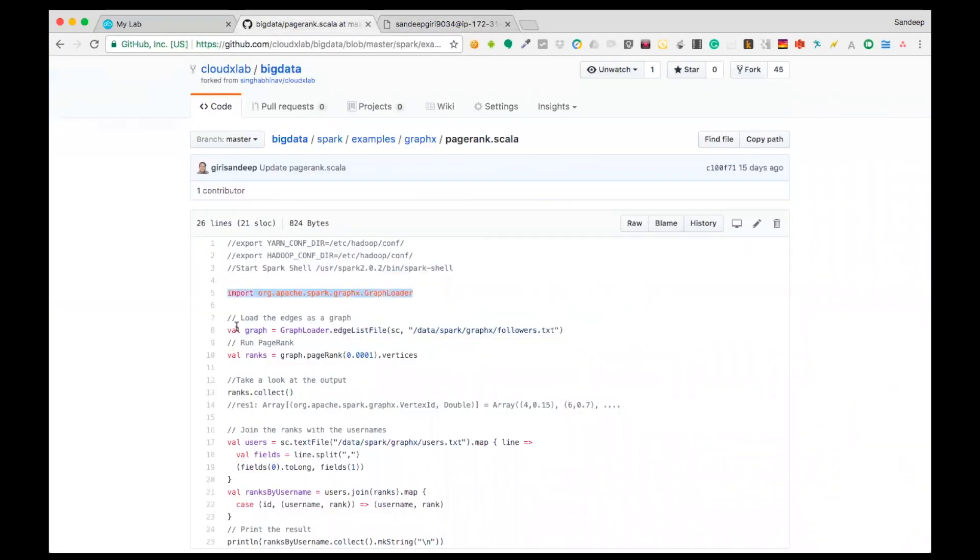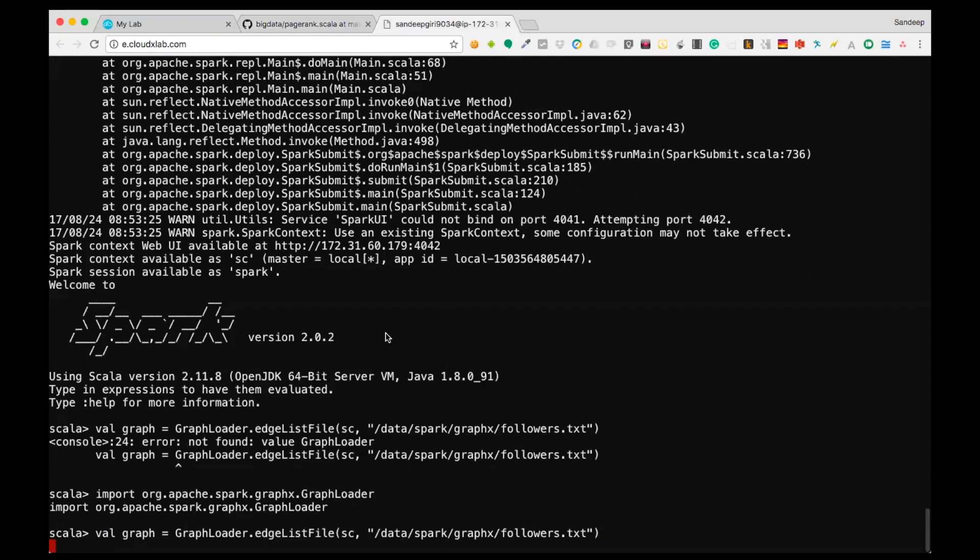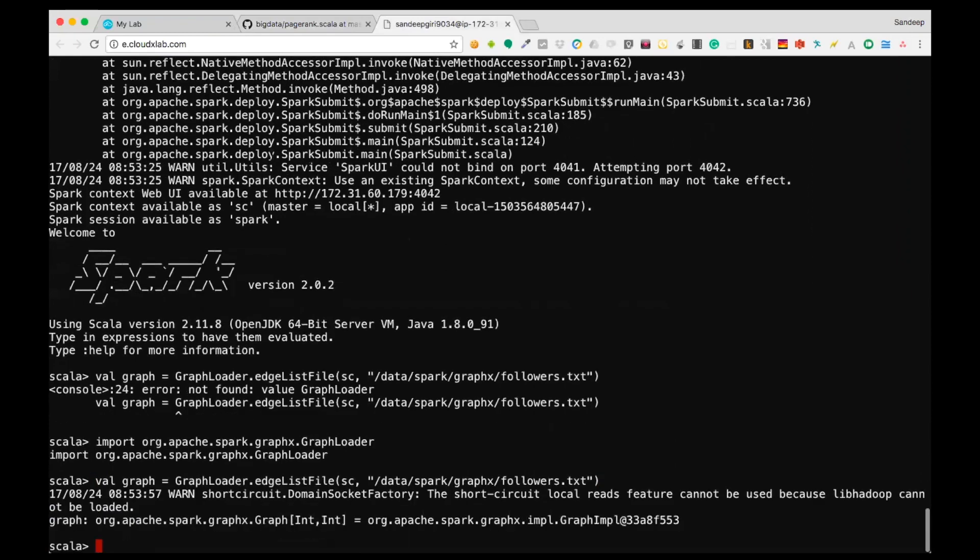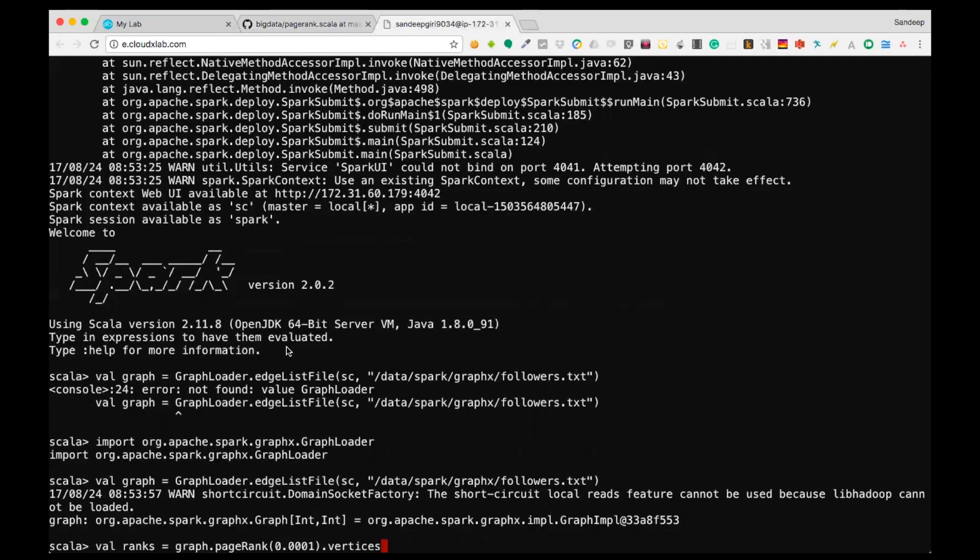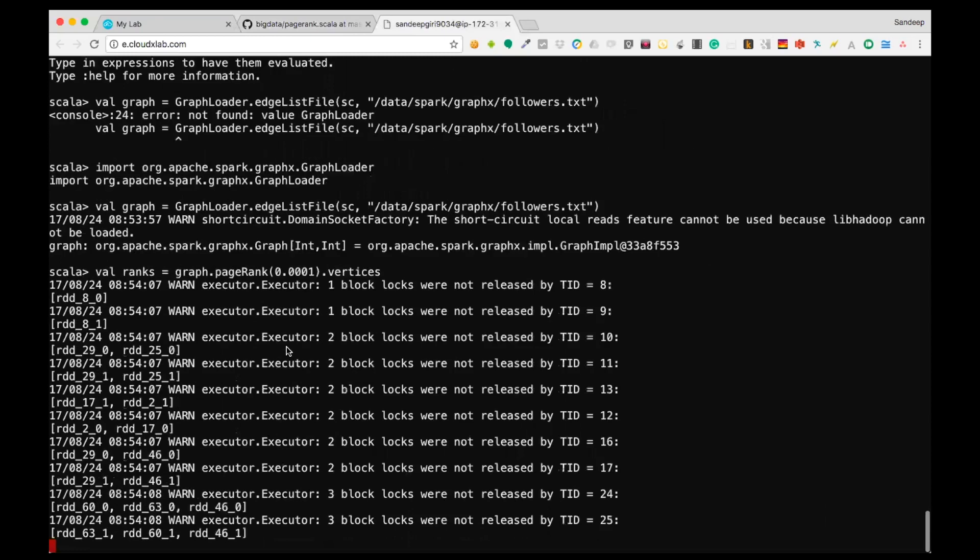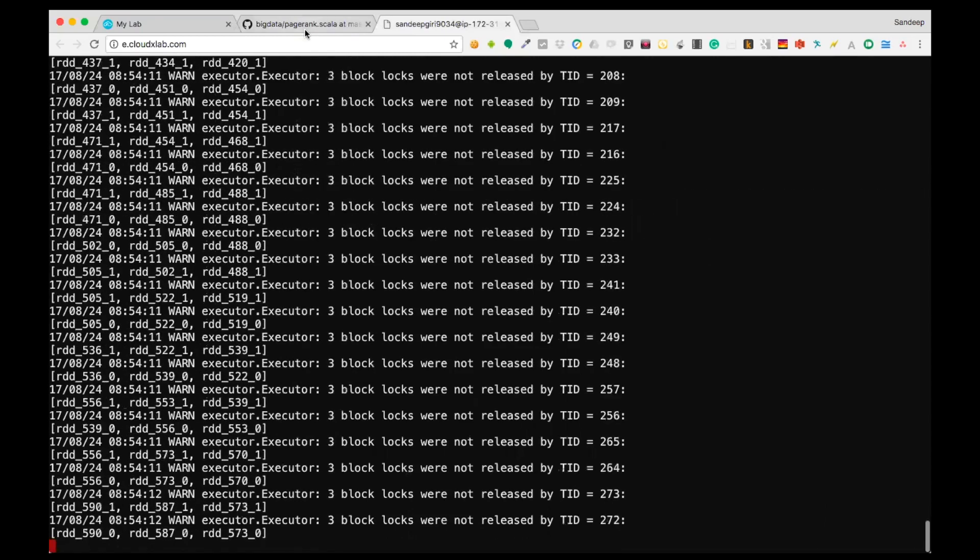First, let's load the graph using GraphLoader.edgeListFile with spark context and the file name as argument. This creates a graph object from plain text file having information about edges. Now, we can simply call graph.pageRank method and select the vertices after the page rank has been executed. That's it. We have calculated the page rank of each vertex.